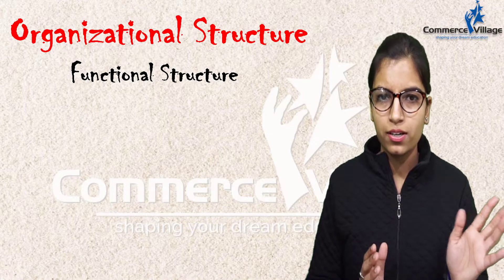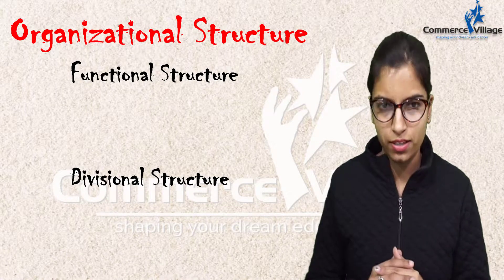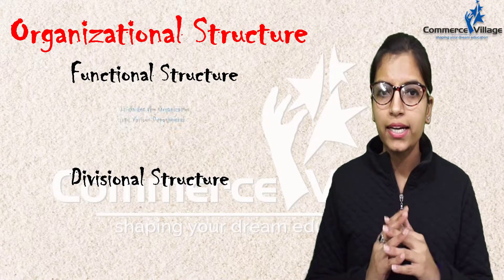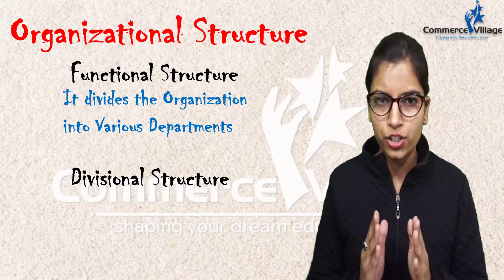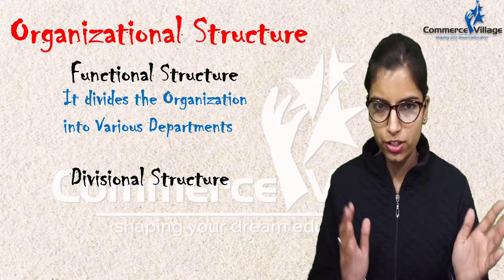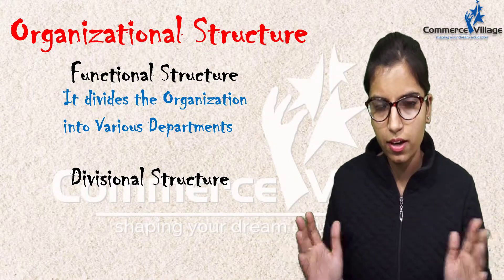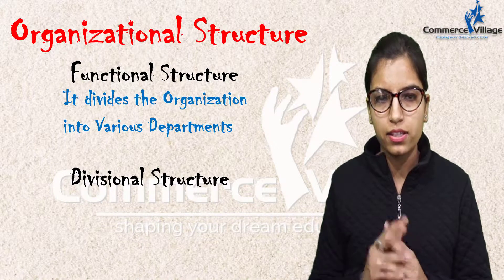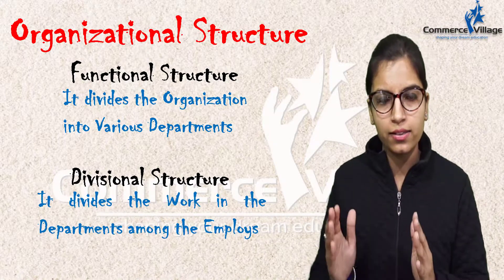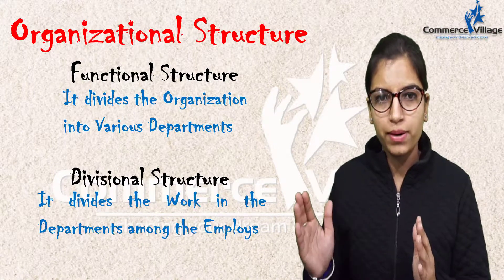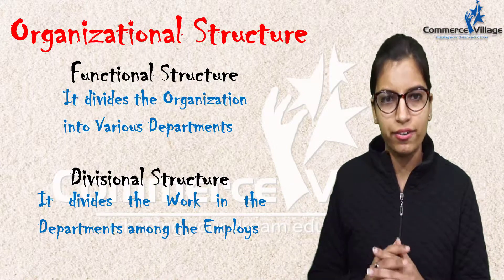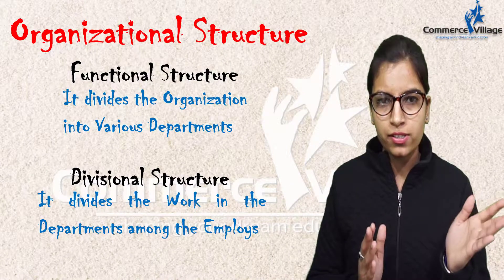How many organizational structures do we have? Number one is functional structure and another one is divisional structure. Functional structure divides the organization into various departments like HR, finance, marketing, etc., whereas divisional structure divides the work in the departments among the employees.